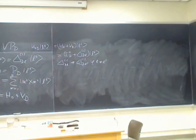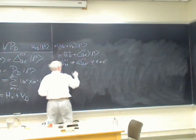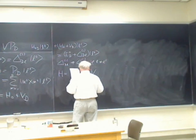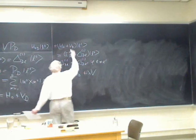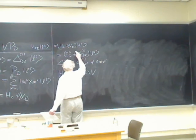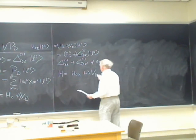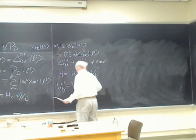The degeneracy is lifted — the energy levels are split. The full Hamiltonian H equals H0D plus λV, and I'm calling this — with a slight correction — H0D plus λV_D prime, where V_D prime equals V minus V_D. So we can write H as H0D plus λV_D prime.